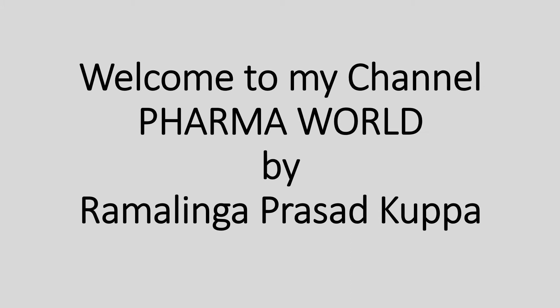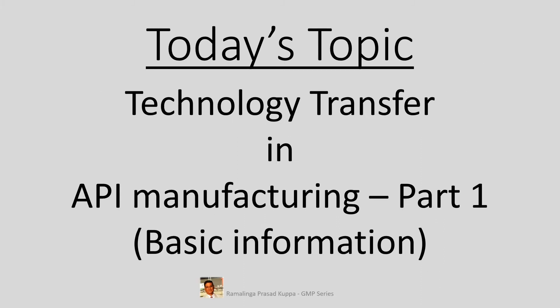Hi everyone, this is Ramaling Prasad Kuppa. Welcome to my channel Pharma World. Today's topic is technology transfer in API manufacturing, Part 1: Basic Information. Technology transfer is a very important aspect and starting point for API commercial manufacturing. The document should be comprehensive in terms of chemistry, various controls at appropriate stages, acceptance criteria, cleaning methods, analytical methods, safety precautions, etc.